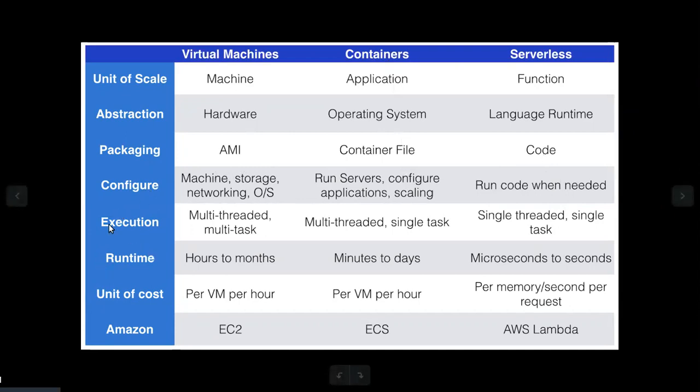You access the container file to get the code and the package, then configure it. The machine includes storage and network application — general purpose and compute purpose. For containers, you run the server, configure the application, then handle scaling using Docker and Kubernetes.